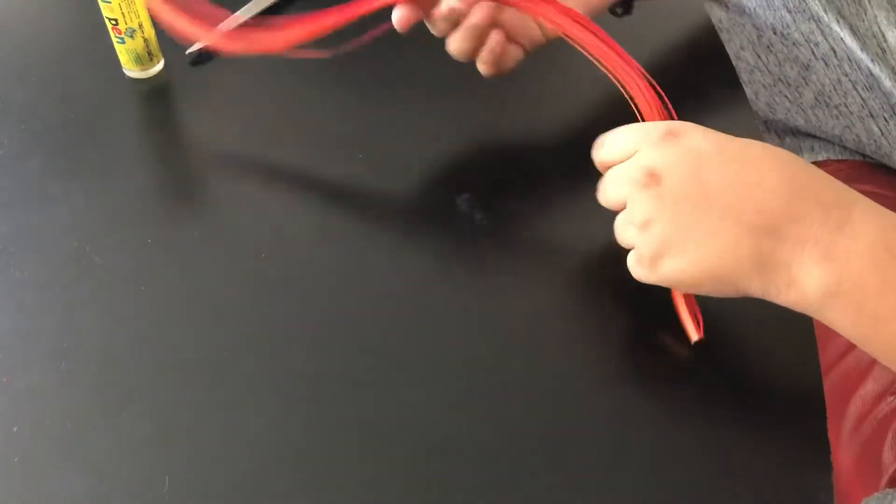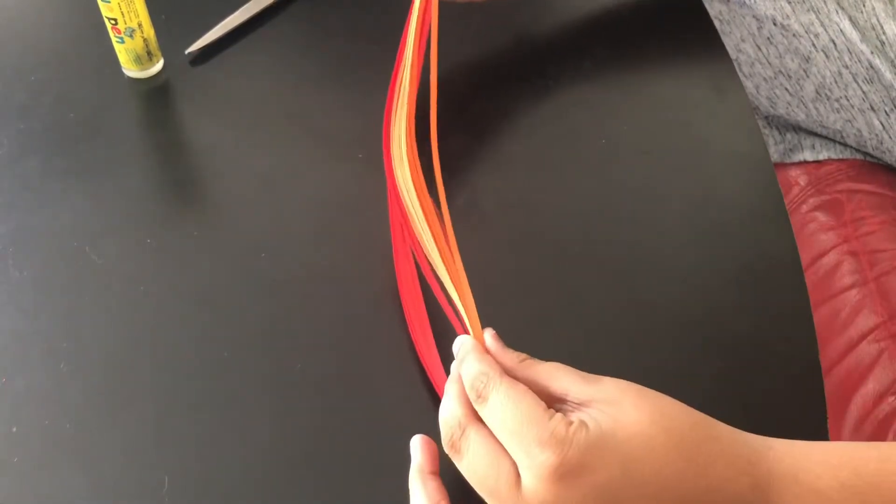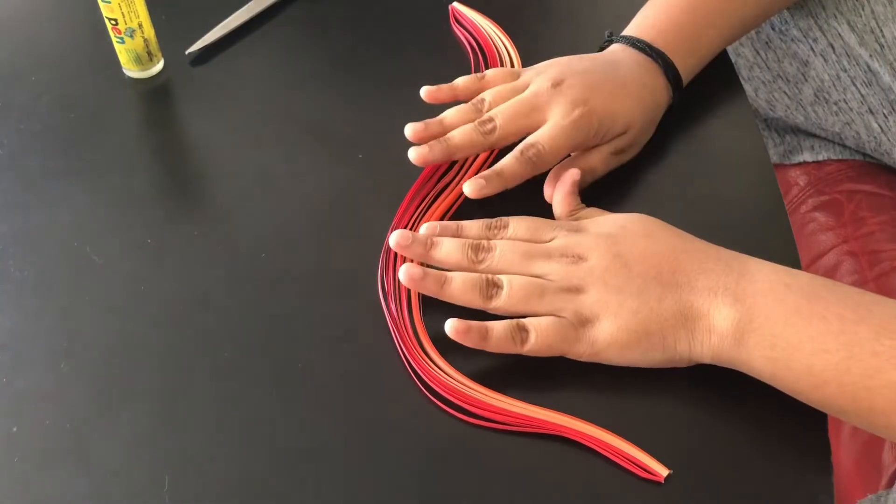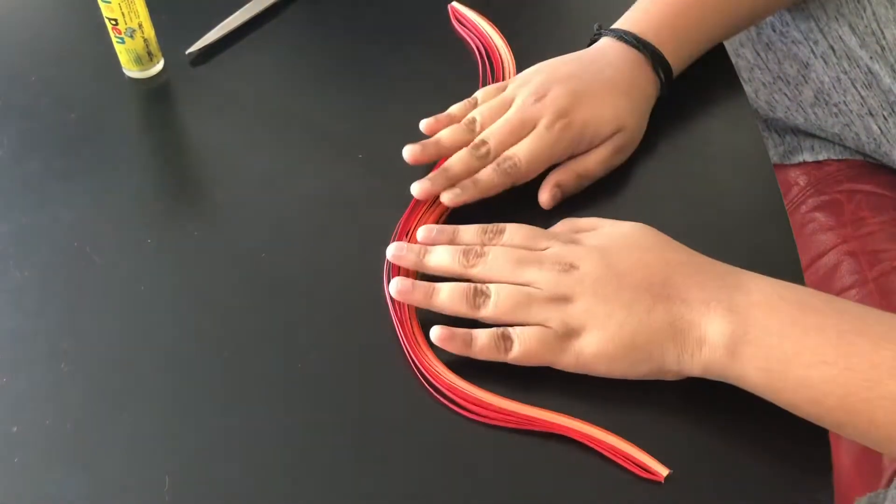Then there is quilling paper. This is the thin one I am using. If you don't have quilling paper, just take a paper, normal A4 sheet paper then cut it into strips. So let's start.